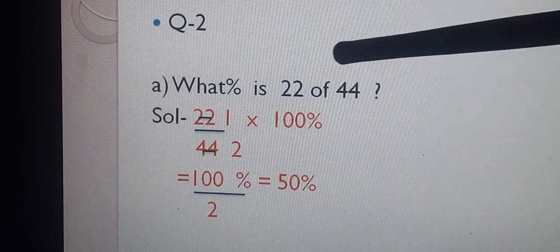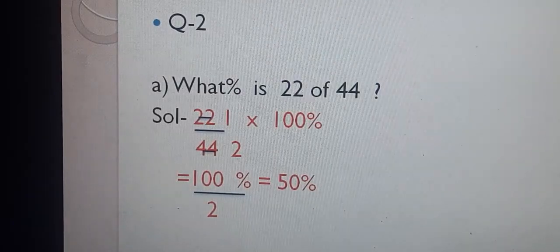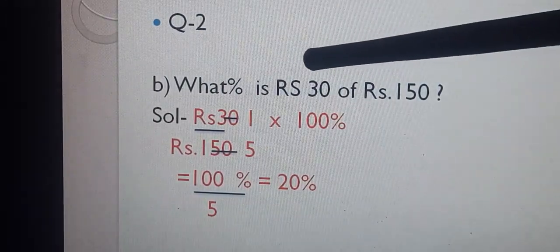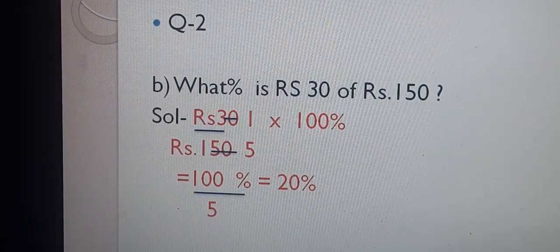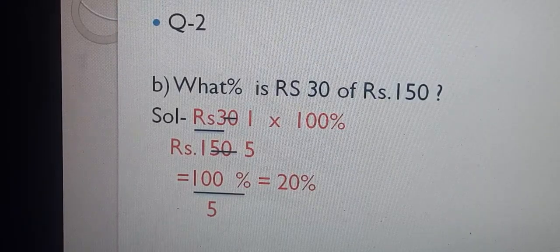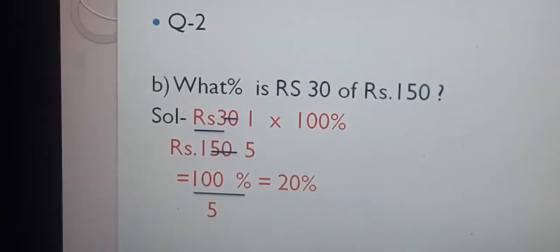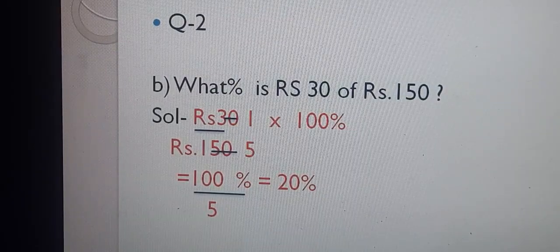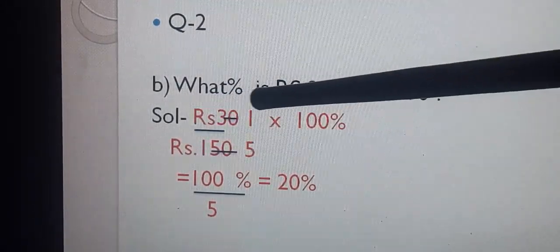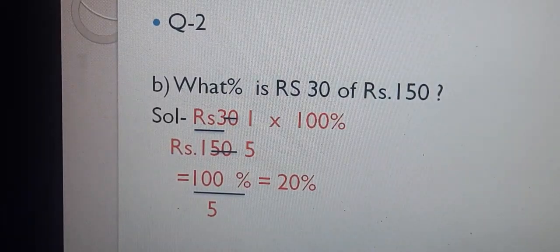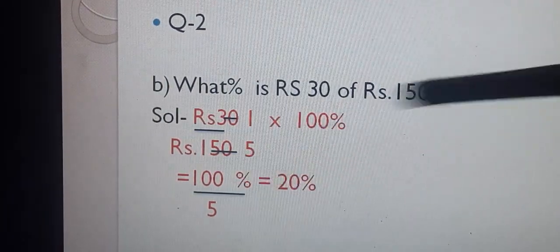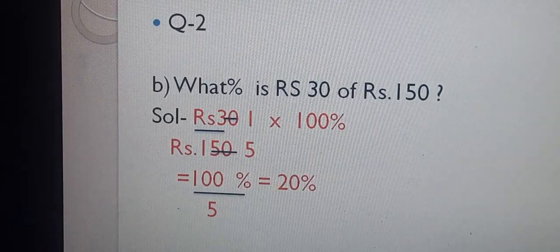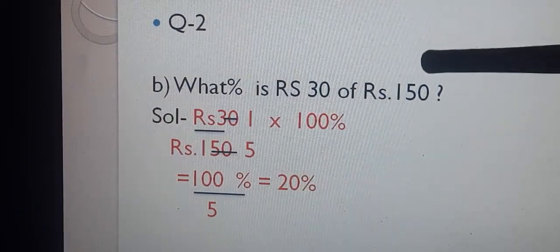Question 2, B part: What percent is Rs. 30 of Rs. 150? Given quantity is Rs. 30 as numerator; total quantity Rs. 150 as denominator, multiplied by 100%. The rupee signs cancel. After cancellation we have 100 upon 5 percent. 100 divided by 5 gives 20. So our answer is 20% — Rs. 30 is 20% of Rs. 150.